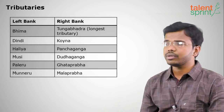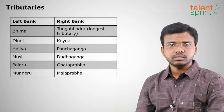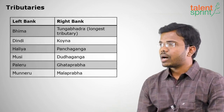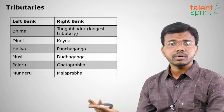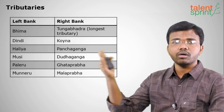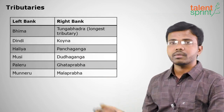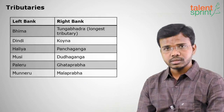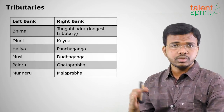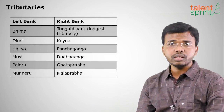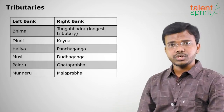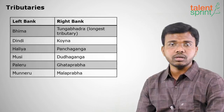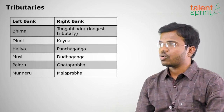The left bank tributaries of the Krishna are Bhima, Dindi, Haliya, Musi, Paleru, and Munneru. Musi has become the drainage line of Hyderabad, like the Yamuna for Delhi. The right bank's longest tributary is the Tungabhadra, originating from Karnataka, on which the famous Almati dam is built.